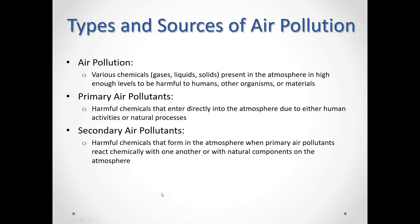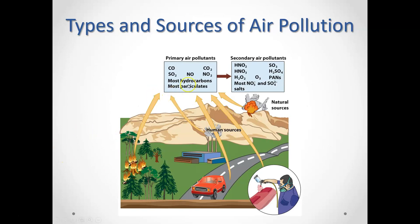Secondary air pollutants are a little bit different. This is when primary air pollutants that are already in the atmosphere begin to interact with each other, or with water vapor or sunlight in the air, and they turn into a different type of pollutant — what we call secondary air pollutants. Note that not all air pollutants are man-made; there are natural sources as well, such as volcanic eruptions, which produce ash, smoke, and particulates, and burning fires — whether natural or human-started — which can also create primary air pollutants.